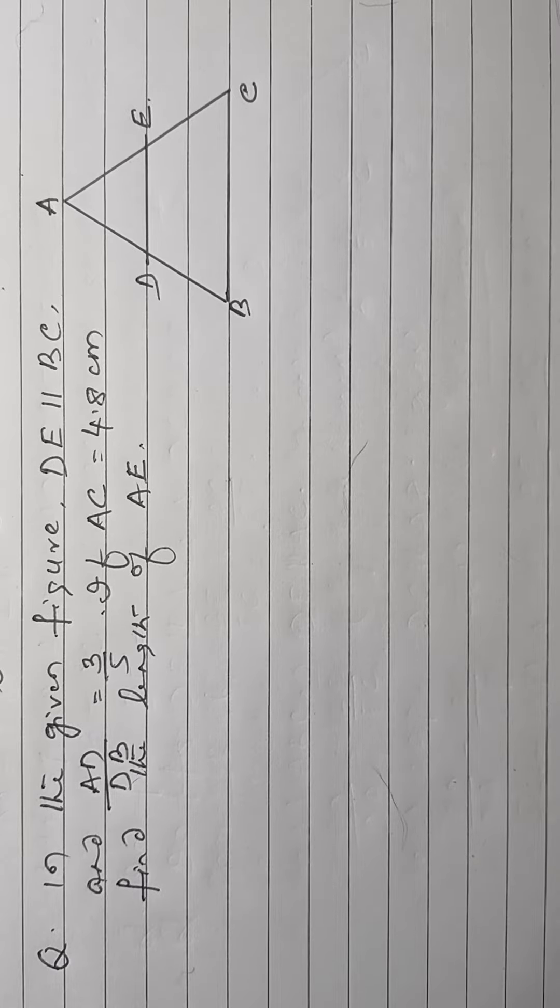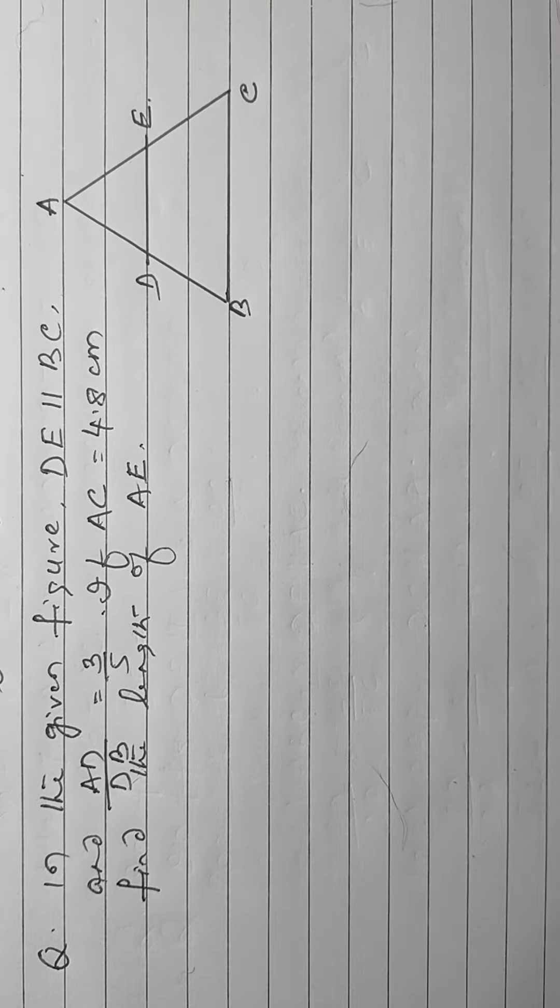In the given figure, DE parallel to BC and AD by DB is equal to 3 by 5. If AC is equal to 4.8 centimetre, find the length of AE.